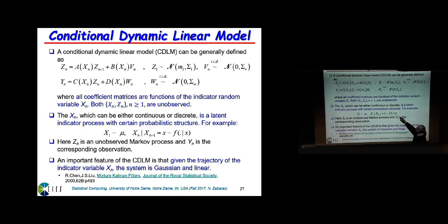X_n evolves through its own dynamic model. Can you tell me why this is called a conditionally linear Gaussian model? The word 'conditionally' refers to conditioning on X — in other words, if you somehow know the X's, this is a linear Gaussian model. And what is the exact solution to a linear Gaussian model? The Kalman filter.